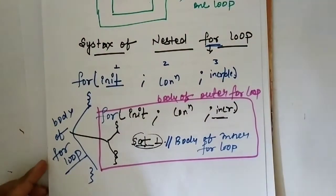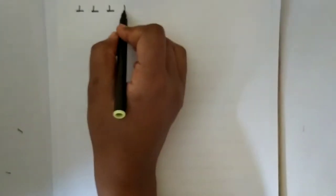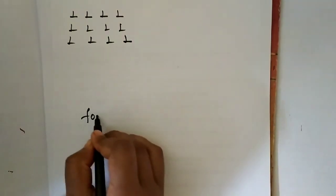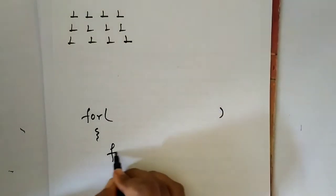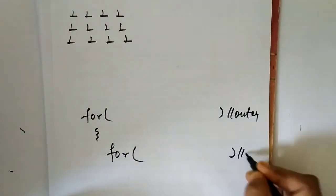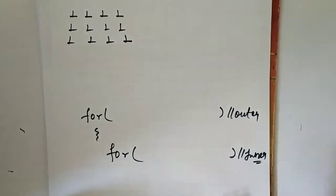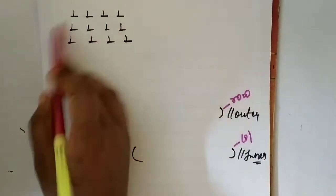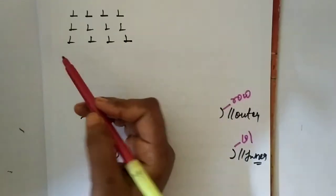Let's discuss one question related to the nested for loop. Here is a question we can solve using the nested for loop. We use two loops — one outer loop and one inner loop. The outer loop is used for the row and the inner loop is used for the column.